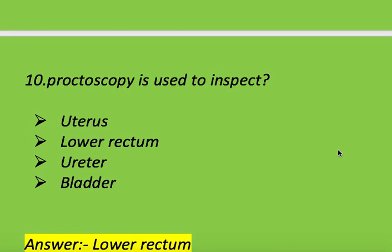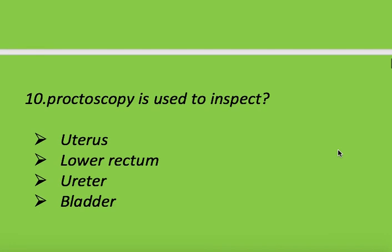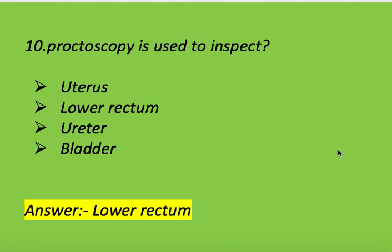Next question: proctoscopy is used to inspect which of the following? Options: uterus, lower rectum, ureter, and bladder. Right answer is lower rectum. Proctoscopy is used to inspect the lower rectum.